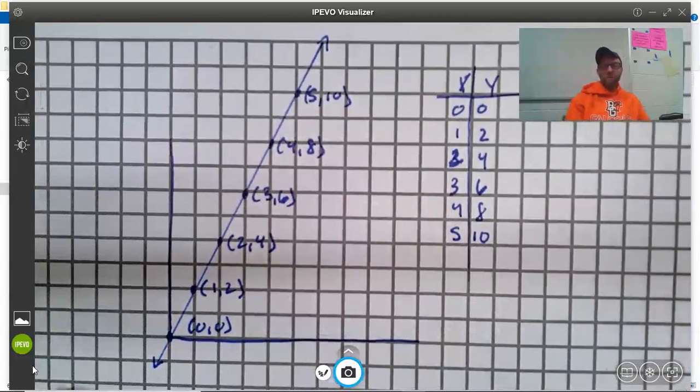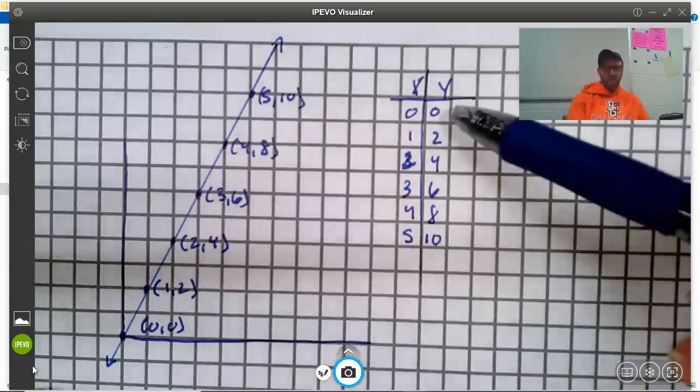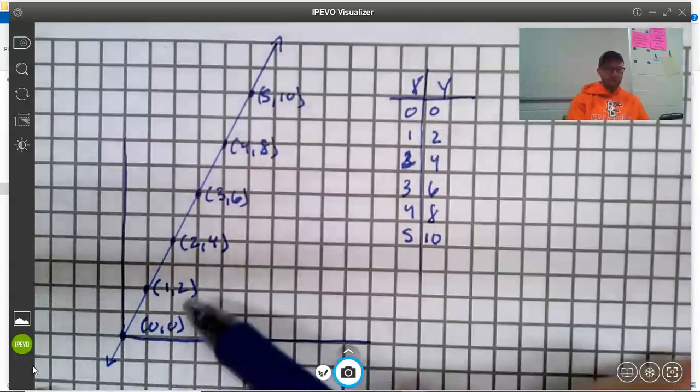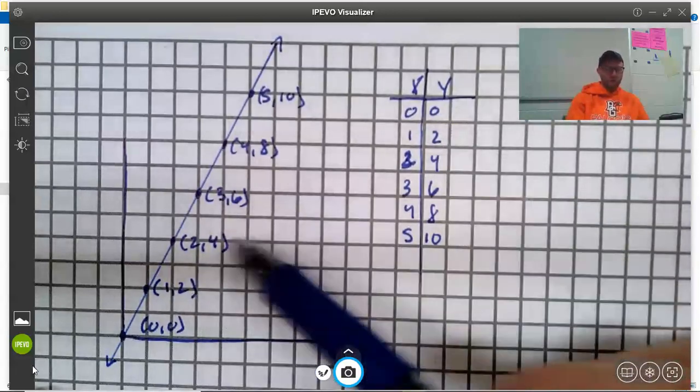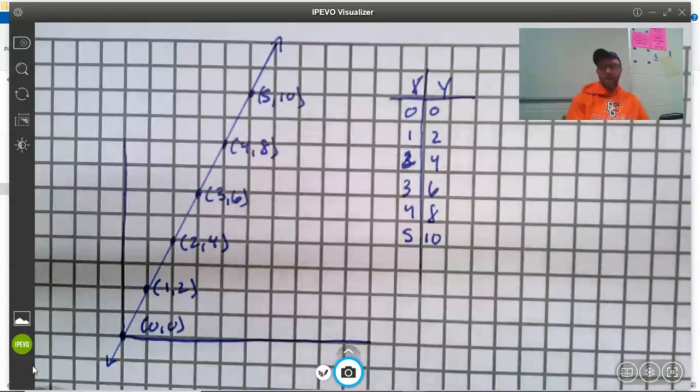So there's this 1, 2 pattern. And we can see that if we mark down what all the coordinates are for the points in a little table. So we've got the point 0, 0, 1, 2, 2, 4, 3, 6, 4, 8, 5, 10. Those are all the points.